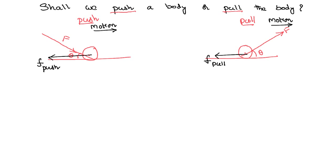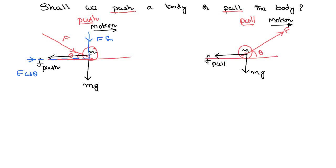We want to calculate in which case there will be more friction and in which case there will be less friction. These bodies have some mass, so their weight will always act in the downward direction due to gravitational force. We can resolve the applied external force into components — these components shall always be along the direction of the vector. F cos theta will be towards the origin, and we can also resolve the force into horizontal and vertical components.